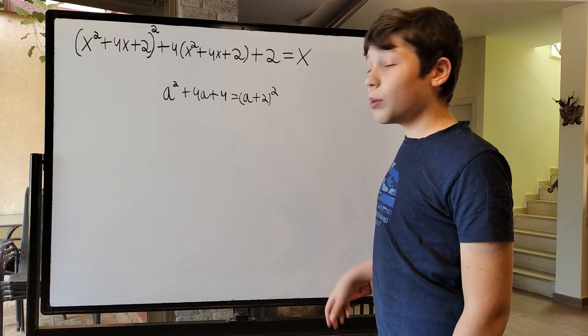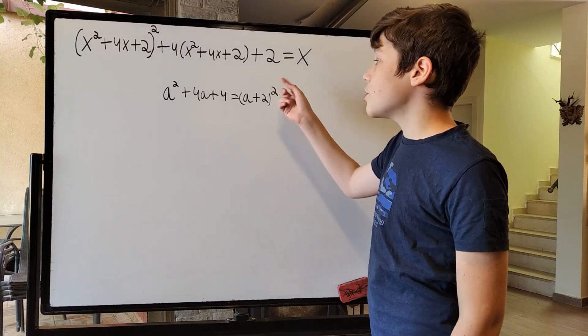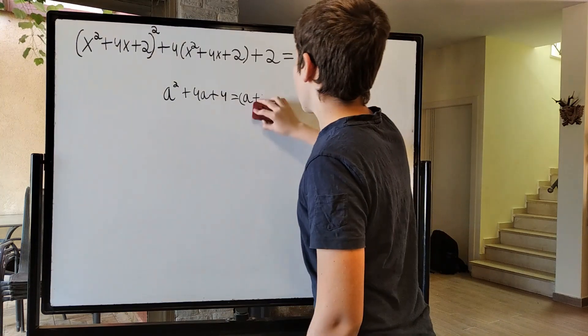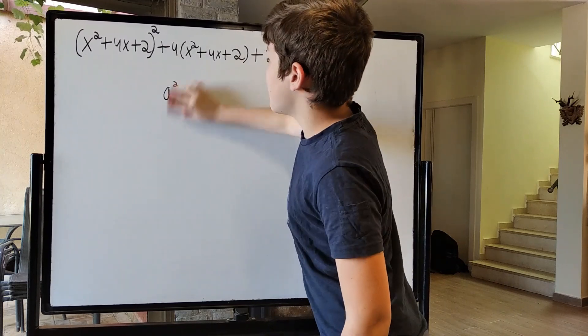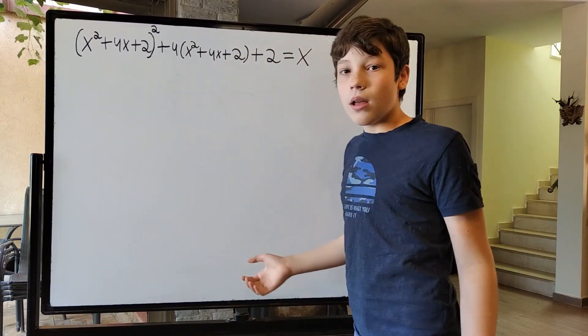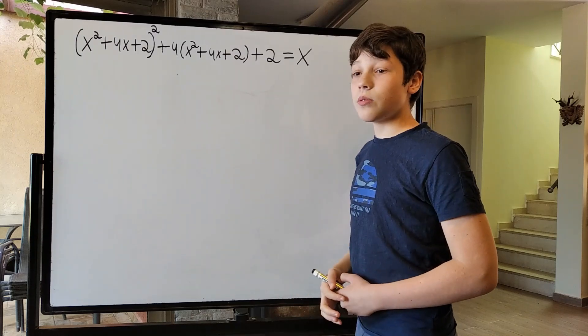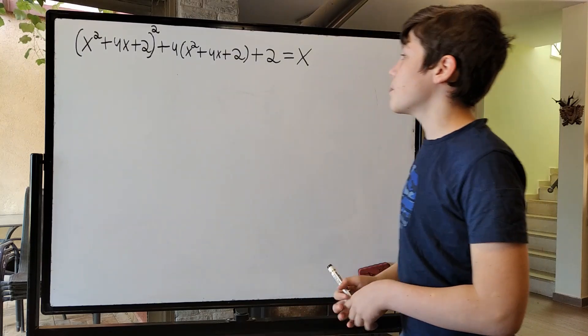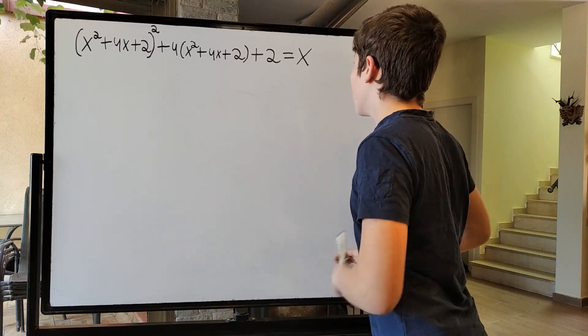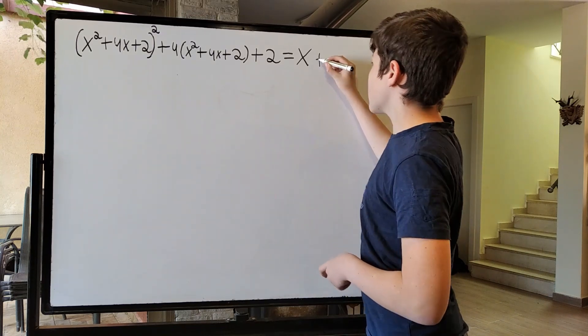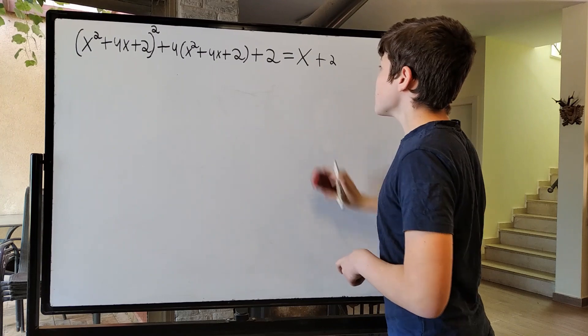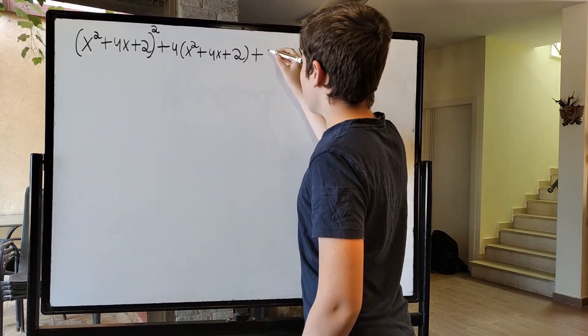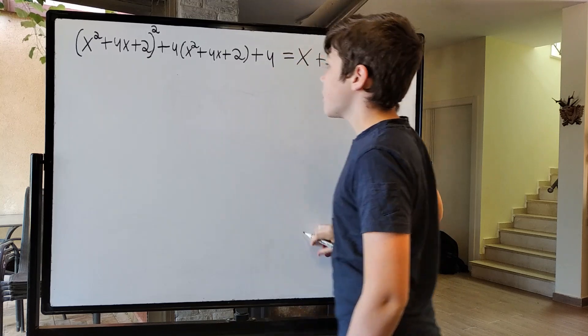And all we needed to do was add 2 for it to get to the form of something squared. So I will obviously do the obvious and add 2. So this x has another plus 2 after it, and this plus 2 becomes a plus 4.